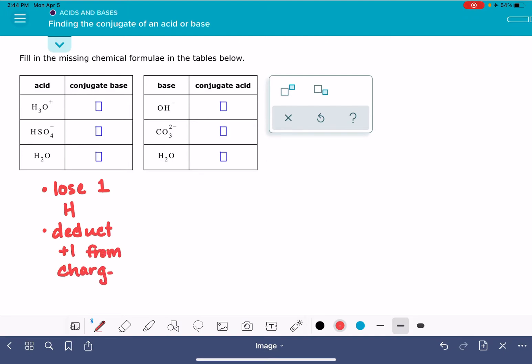This is because an acid, when it turns into its conjugate base, it does that by losing one hydrogen atom and also by dropping its charge down by one unit.